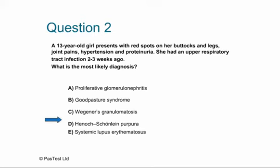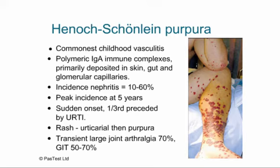HSP is the commonest childhood vasculitis, caused by polymeric IgA immune complexes deposited primarily in the skin, gut, and glomerular capillaries. The incidence of nephritis is 10–60% depending on definition. Peak incidence is around age 5, usually of sudden onset and preceded by a URTI in about a third of cases. The rash typically occurs on extensor surfaces of arms, legs, and buttocks, beginning as urticarial lesions that become purpuric, and can crop over many weeks or months.